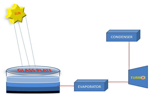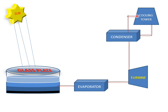The turbine is connected further to the condenser so that the fluid used in the turbine is changed back into liquid. The condenser is connected to the cooling tower to condense the vapors produced by the evaporator. The condenser is then connected to the pump, and the pump is connected back to the evaporator.